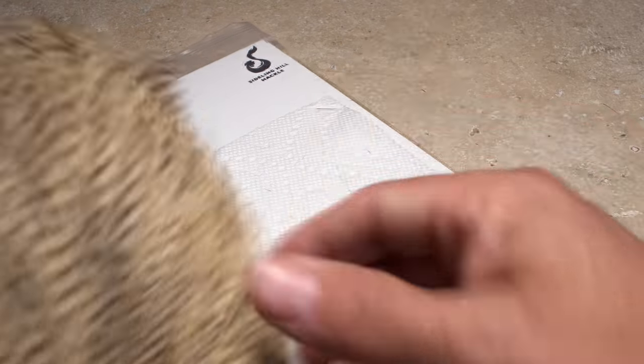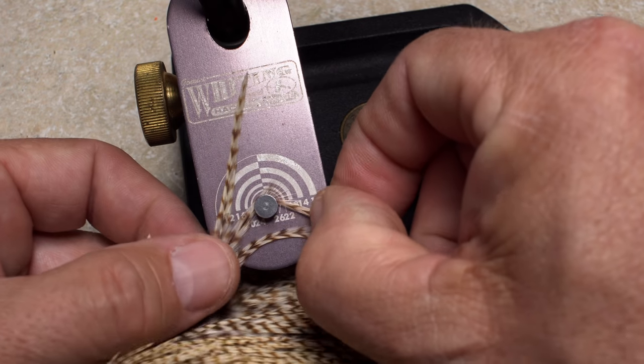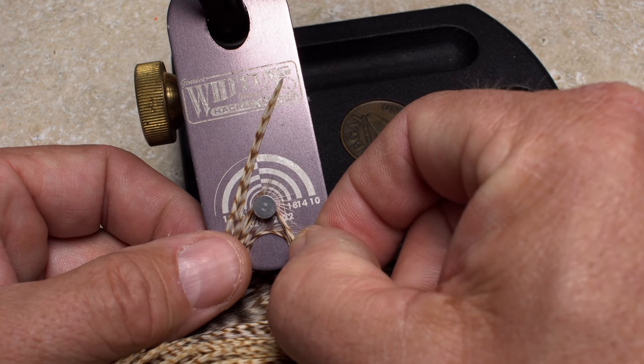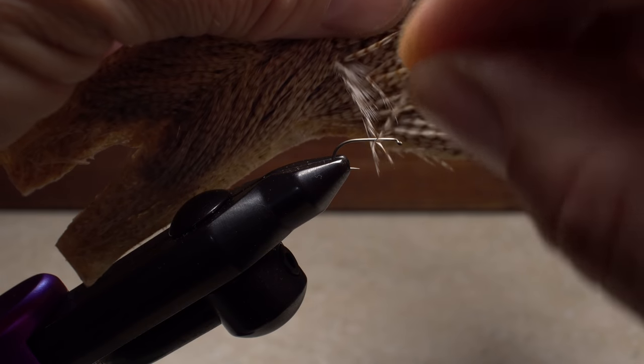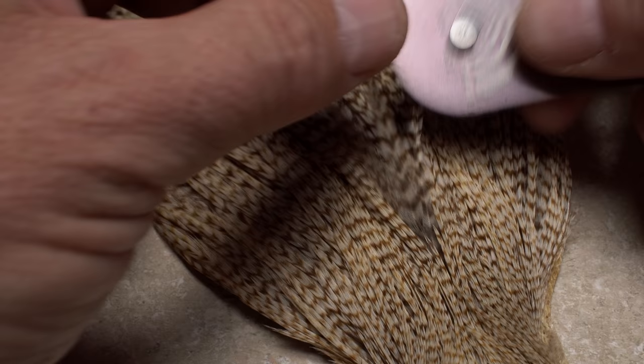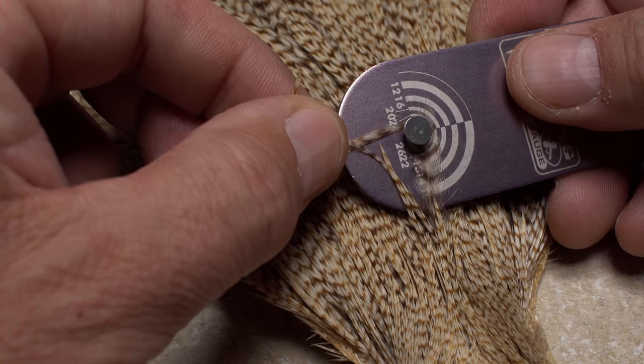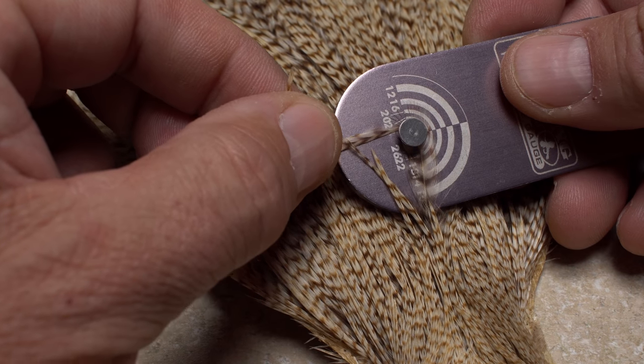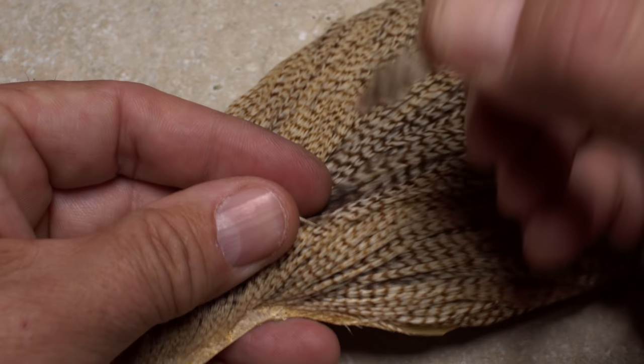Measuring the feather before it's plucked from the skin makes a lot of sense. Once again, you can measure it on the hook as well. I actually like to use the hackle gauge off the vise stem for measurement. Only when you're sure of its size do you pluck the feather free.